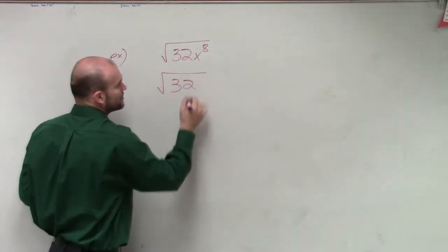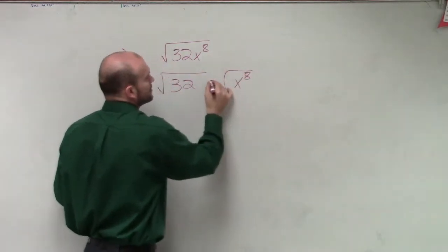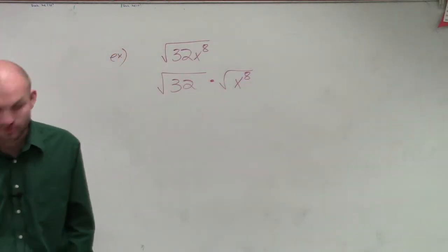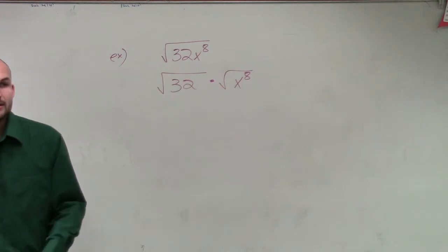So I could say that's going to be the square root of 32 times the square root of x to the eighth, right? Now, since we're taking the square root, that's my ID, since we're taking the square root...